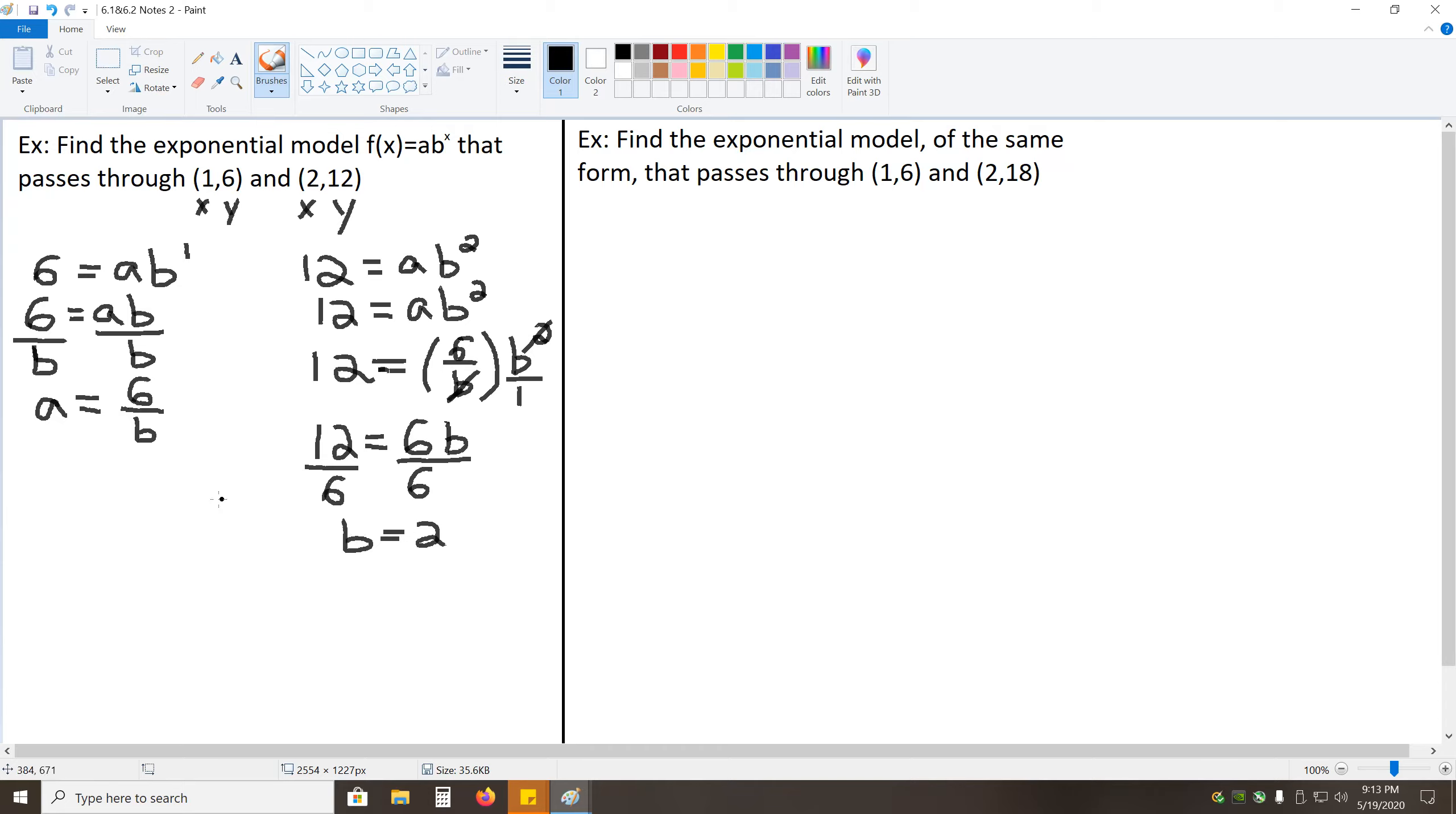And now, when we substitute that into the right equation, we get 12 equals A is now 6 over B times B squared. And now, simplifying this, if we put this B squared over 1, we have a B in the top and bottom that we can cancel out, leaving us with just one B in the top. So, we get 12 equals 6 times B. And dividing each side by 6, we get B equals 2. And since B equals 2, plugging that back in over here in our equation for A, we get A equals 6 divided by 2. So, A equals 3. So, what's the exponential function of the form AB to the X that passes through these two points? It's F of X equals A, which is 3, times B to the X, so times 2 to the X power. Because we didn't put the 3 in the parentheses with the 2, it is not being raised to the X, only the 2 is. So, this is our exponential function.